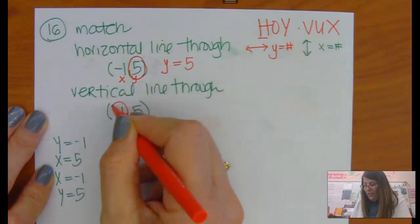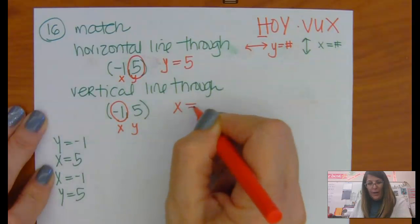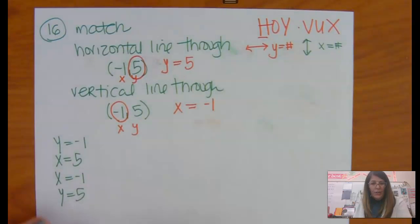And vertical, VUX, is going to be x equals whatever is in the x spot. So you're just going to match that up.